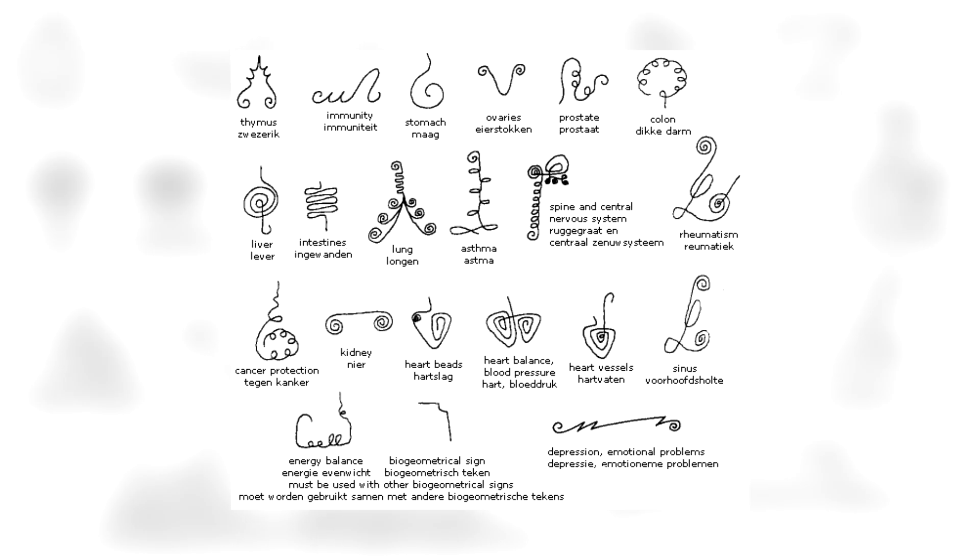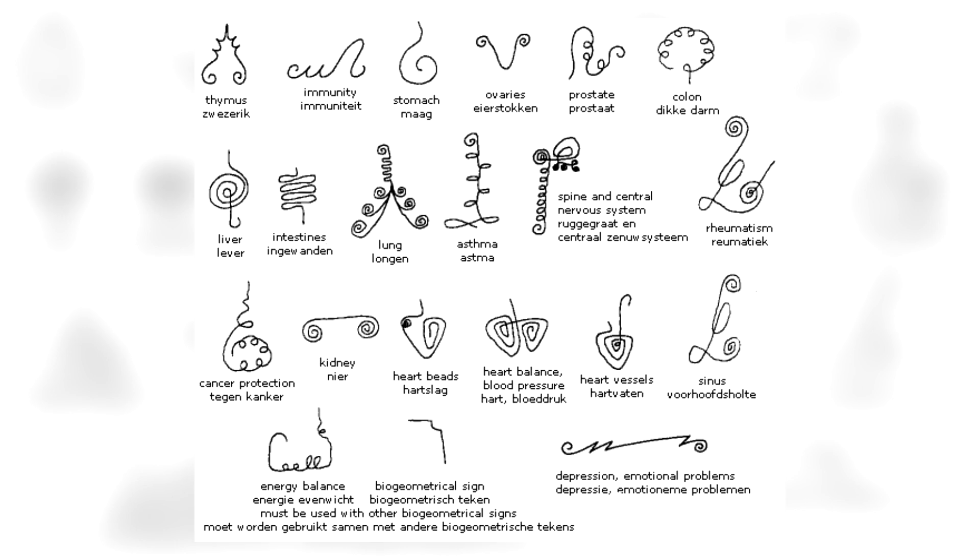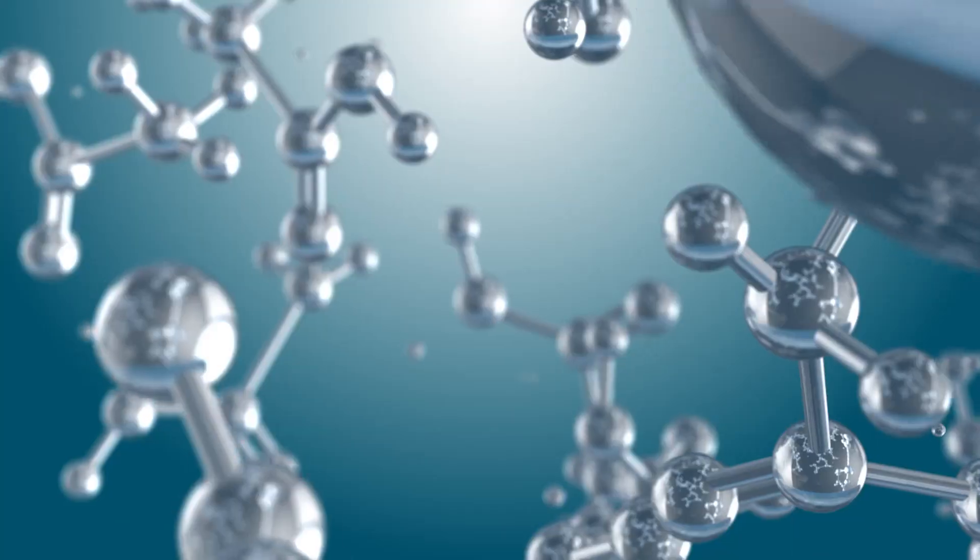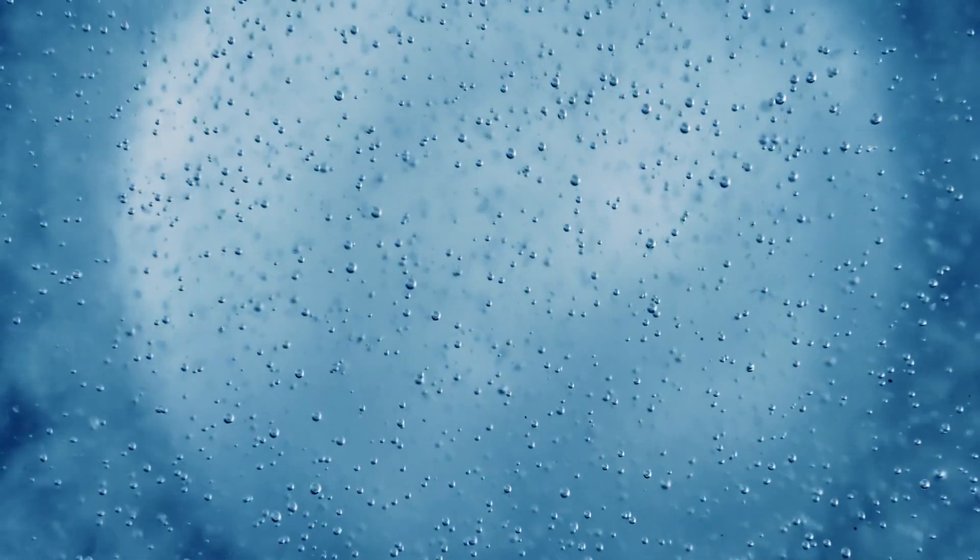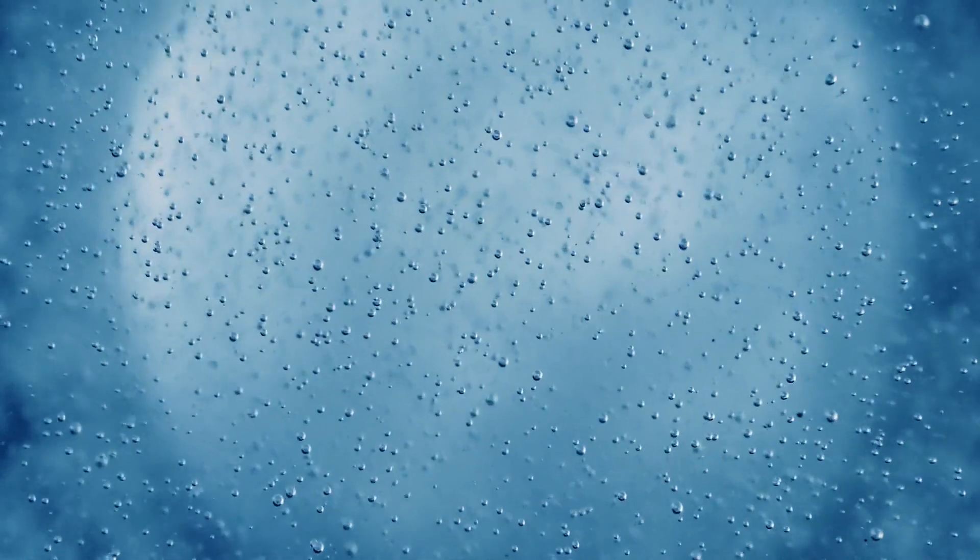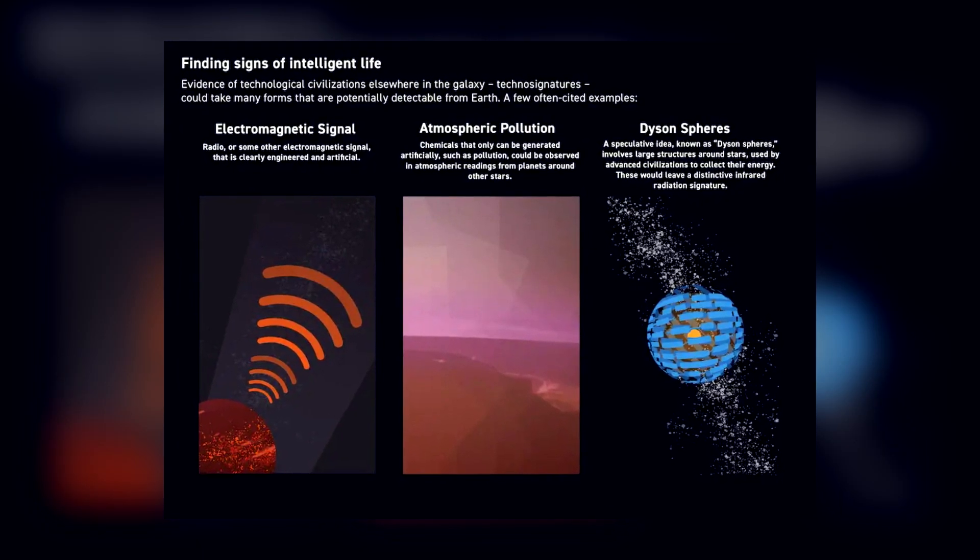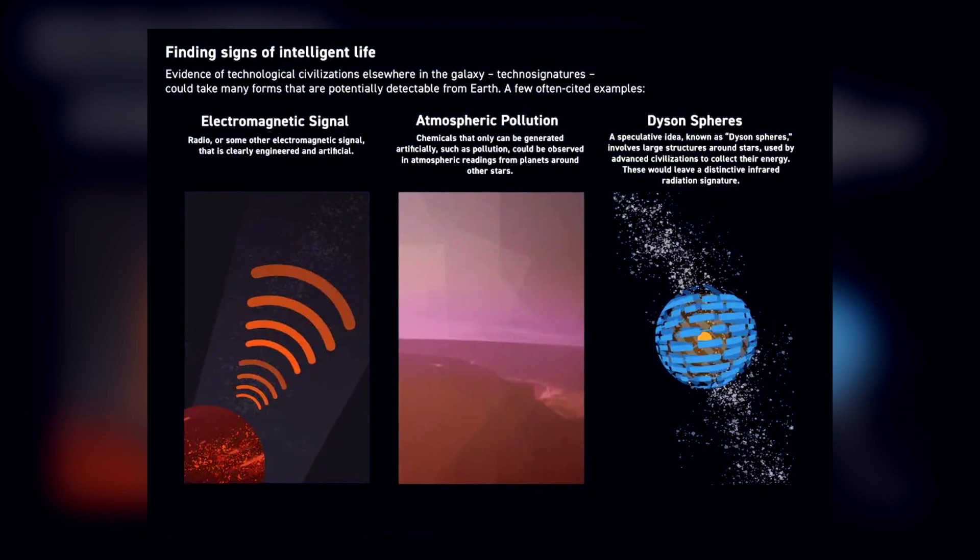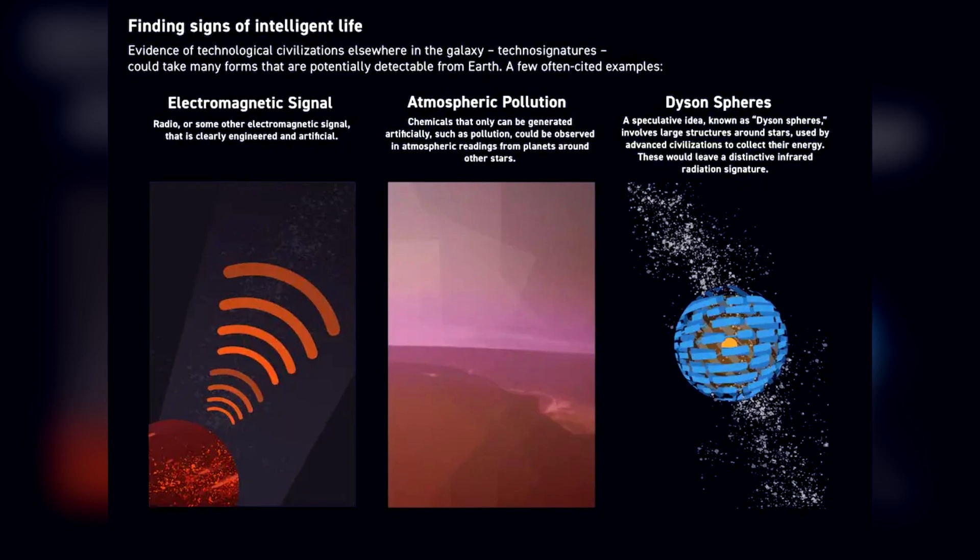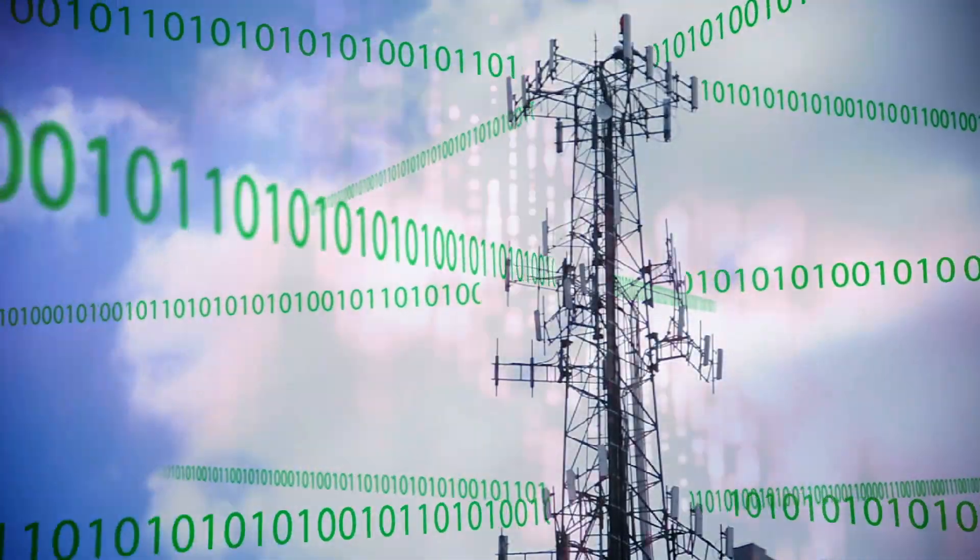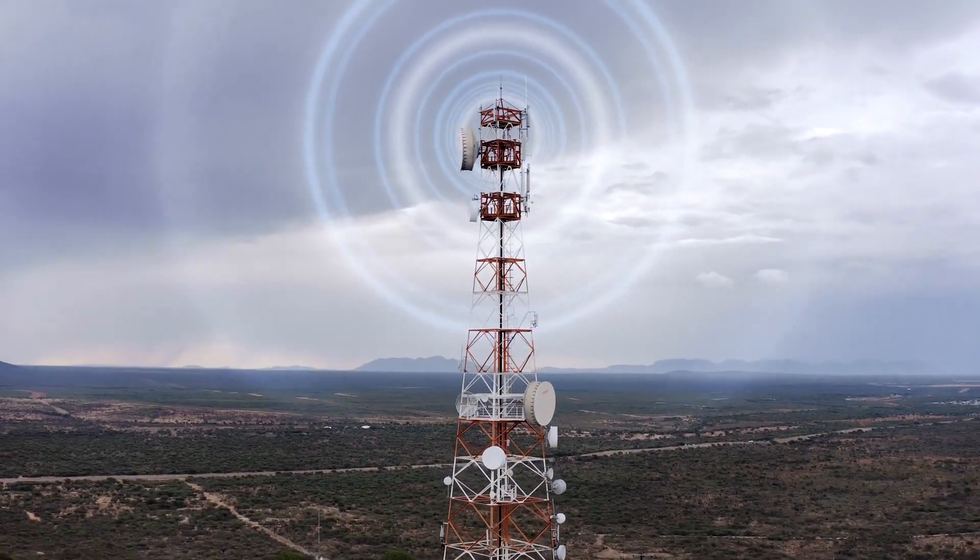These signs, aptly named biosignatures and technosignatures, serve as cosmic fingerprints. Biosignatures, akin to molecular breadcrumbs, signify the presence or activity of living entities on a celestial body. Consider oxygen, a quintessential biosignature on Earth, a byproduct of photosynthesis orchestrated by plants and algae. Meanwhile, technosignatures are cosmic echoes of intelligence, signals or artifacts suggesting the hustle and bustle of advanced civilizations. Picture radio waves, a resonating technological signature on Earth, a testament to human communication and broadcast.